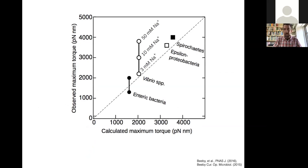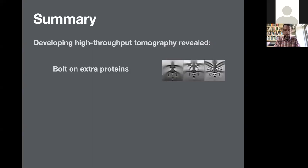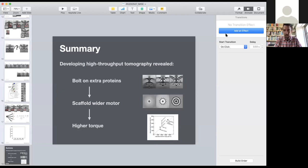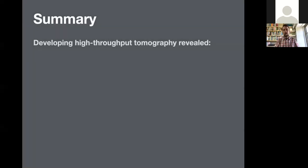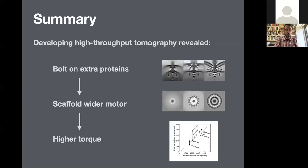So what I can summarize from that is what the electron cryotomography technique has enabled. It has enabled throughput and development of data collection techniques, which has in turn enabled this bolting on of extra proteins that are scaffolded, and in turn has shown that these extra proteins have played a role of scaffolding wider motors to produce higher torque. So that's the biological insight.